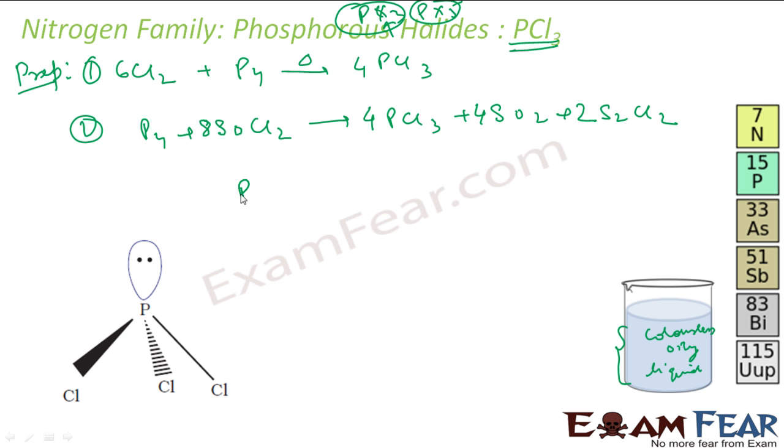For example, you take PCl3 and the moment there is some moisture, it will hydrolyze to H3PO3 and HCl.